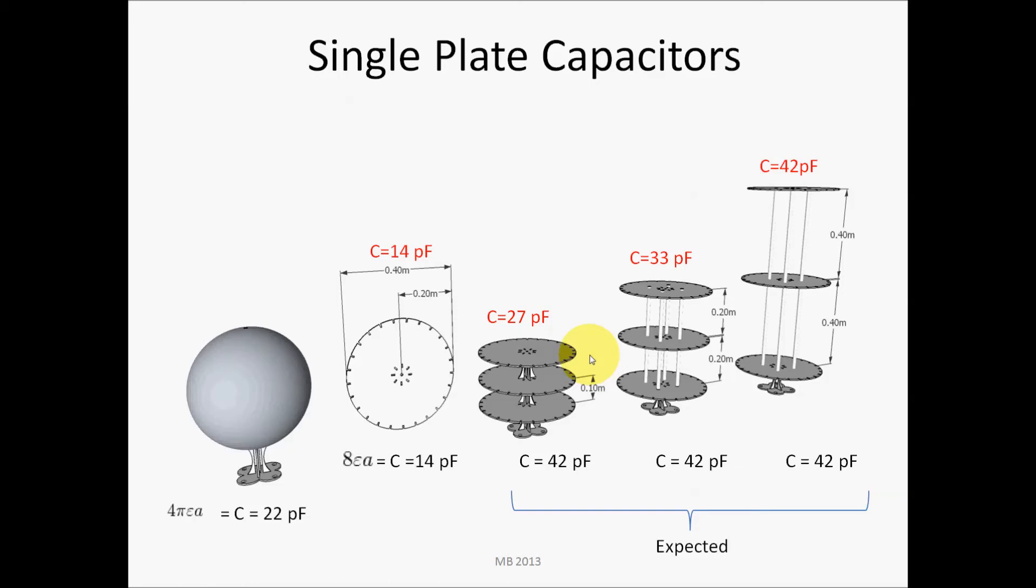So I built some of these plates—these are CAD drawings but I actually built these physical objects, these disks. I cut them out on a laser. And my thinking was that a sphere of a similar radius would have a 22 picofarad capacitance, whereas a disk would have a 14 picofarad capacitance.